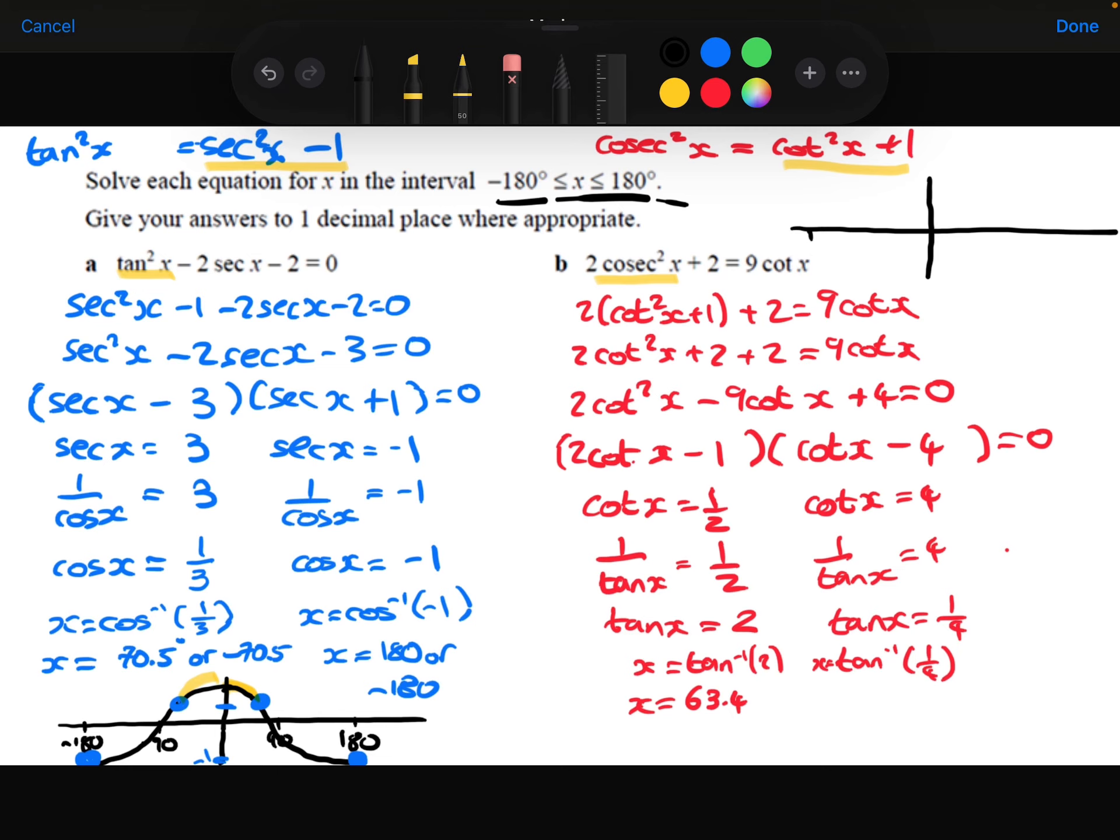From minus 180 up to positive 180. So it's equal to 2 here and here. We've just worked out that this here is 63.4. So this is going to be minus 180 plus 63.4, which is going to be minus 116.6.